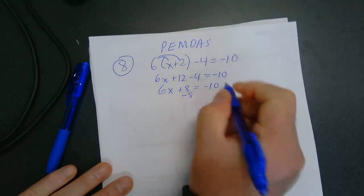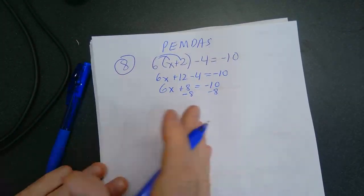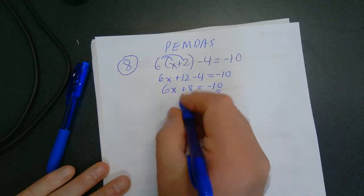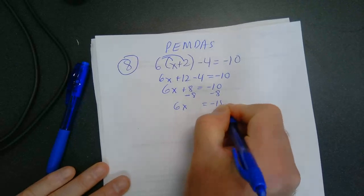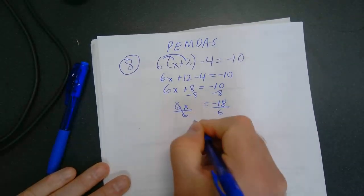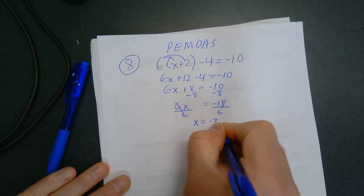Subtract 8 from both sides. I'm now getting the X's on the left and the numbers on the right. Okay, so I get 6X is equal to negative 18. Divide. I get X is equal to negative 3.